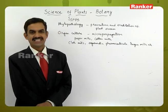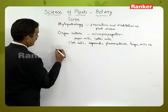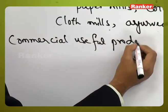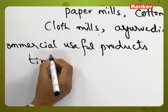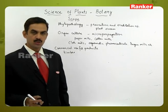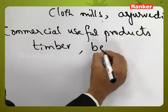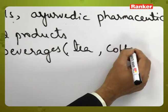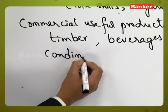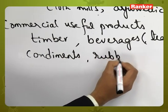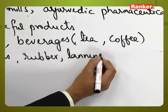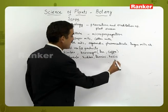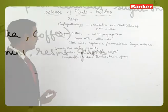Apart from this, many commercially useful products are derived from plants, including timber from timber-yielding plants, beverages like tea and coffee, as well as condiments, rubber, tannins, resins, and more. Many such commercial products from plants are required for the development of human life.